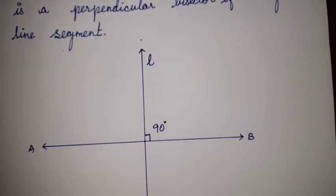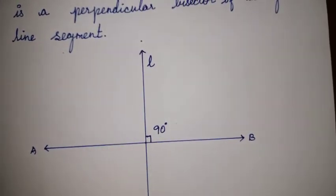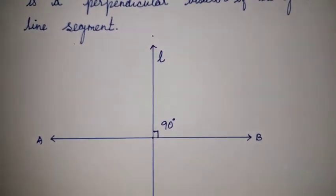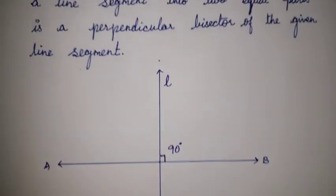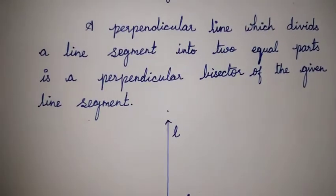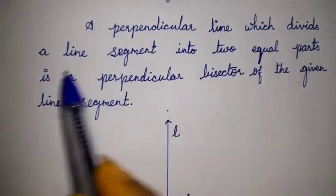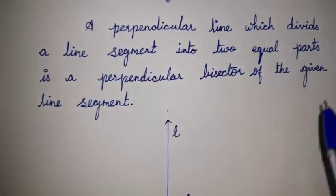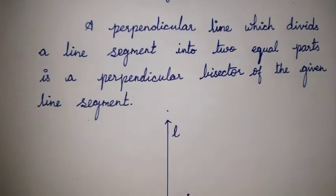A perpendicular line drawn anywhere on a line segment is not necessarily a perpendicular bisector. The perpendicular line must divide the line segment into two equal parts — that is what bisector means: two equal parts. A perpendicular line which divides a line segment into two equal parts is the perpendicular bisector.